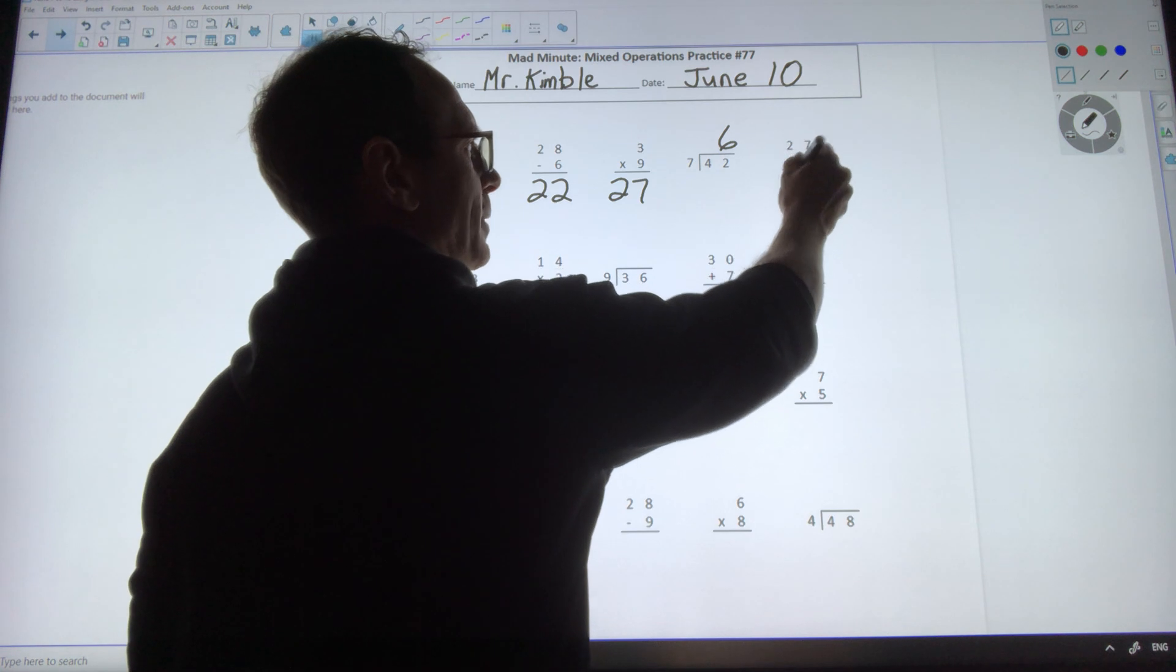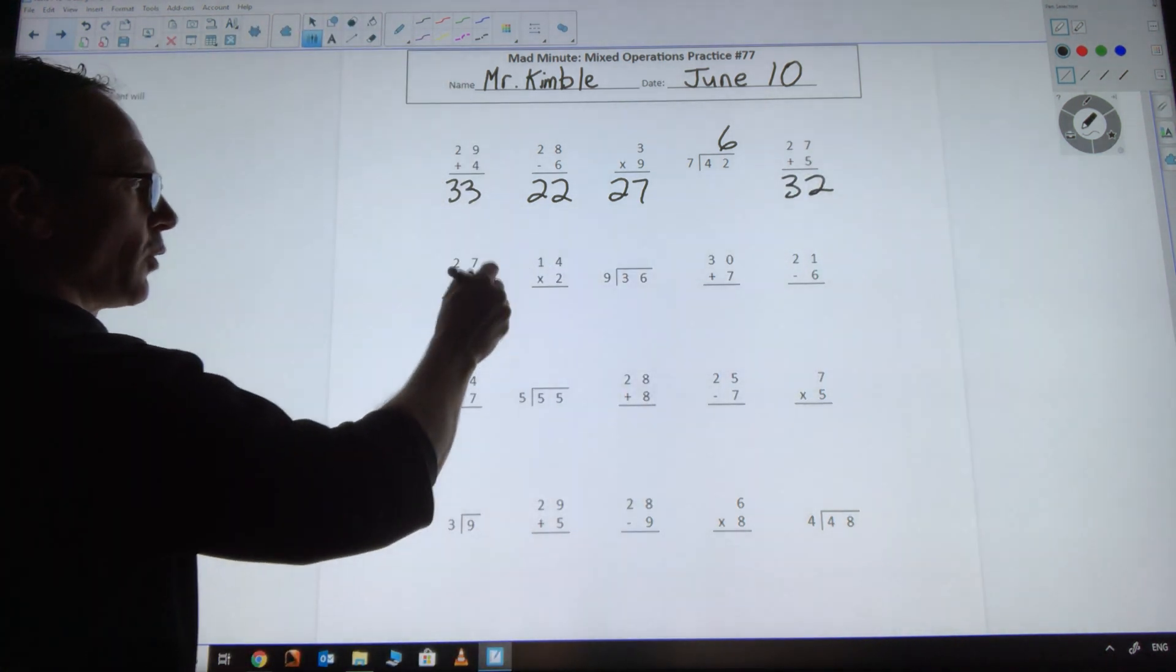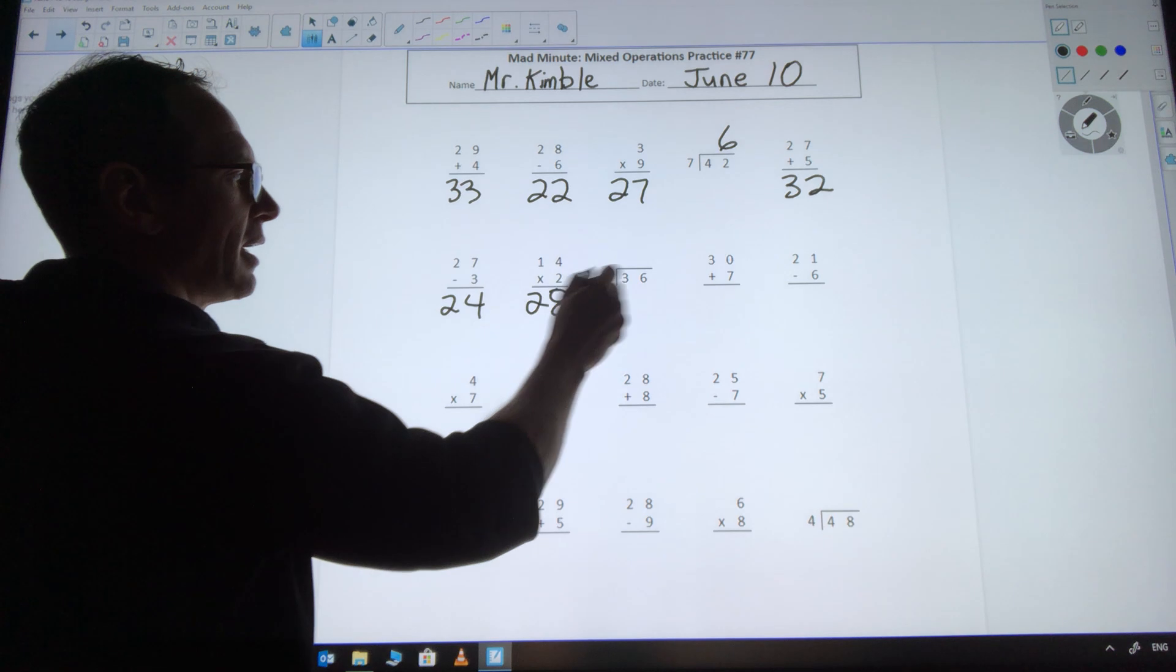27 plus 5 is 32. 27 minus 3 is 24. 14 times 2 is 28. 36 divided by 9 is 4.